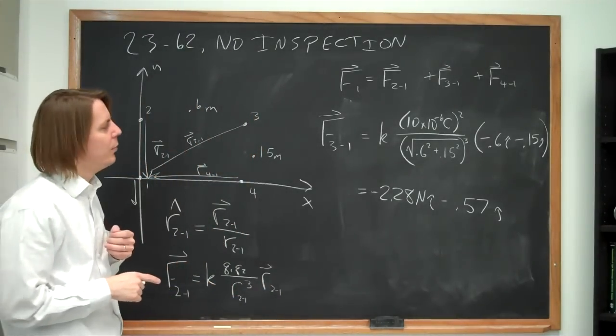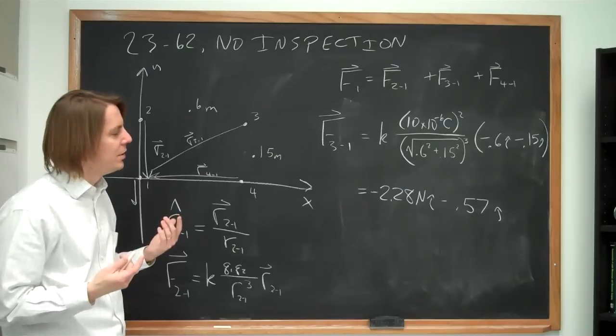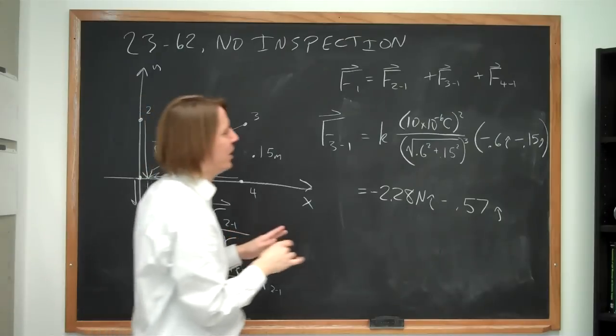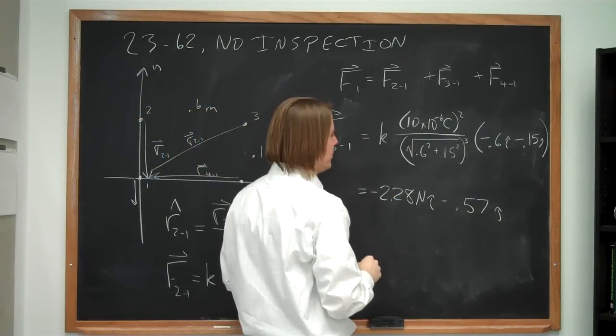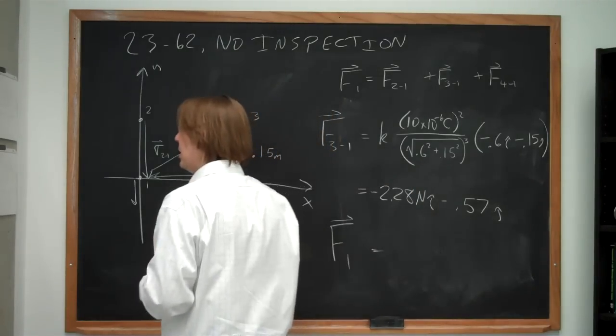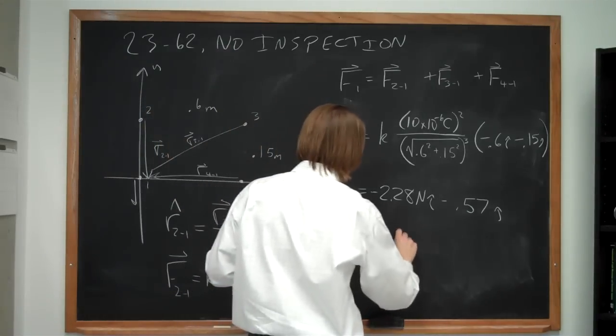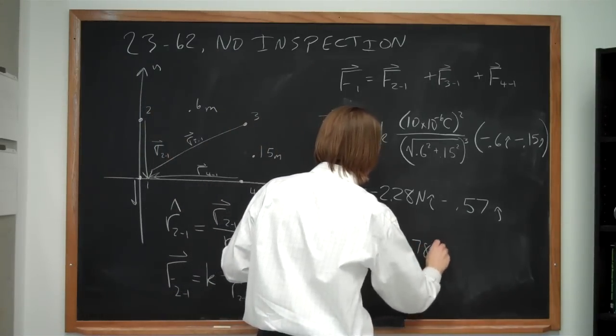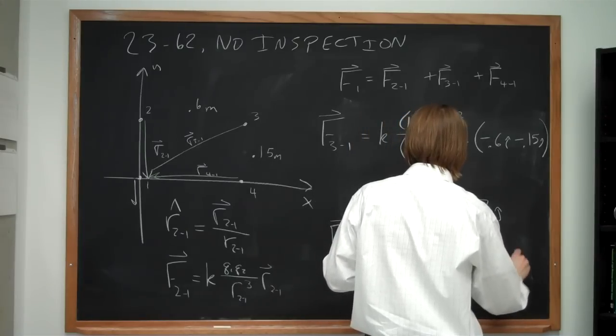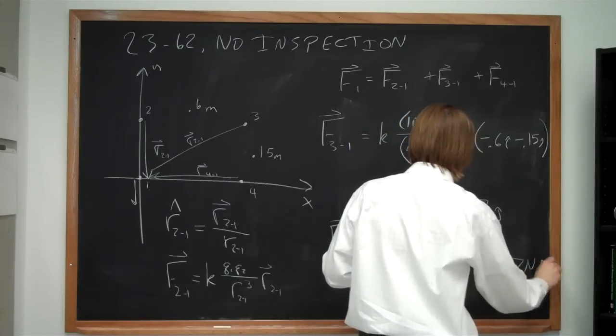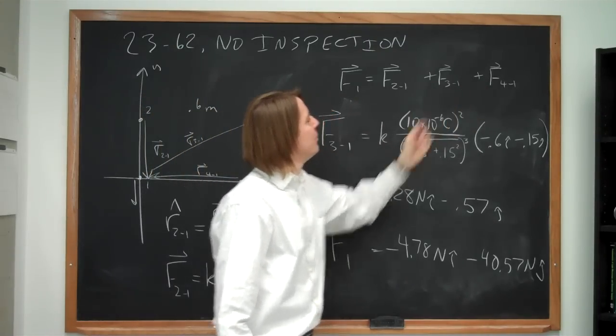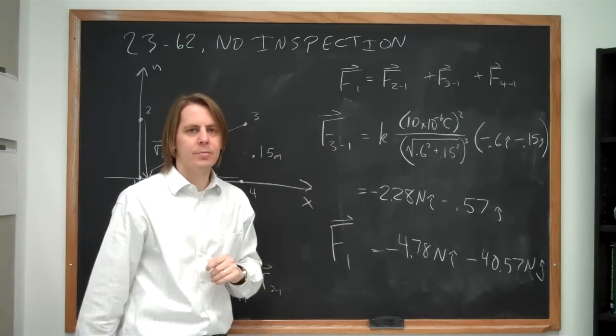And that's exactly what we got when we did 2362 the normal way in class. But there we did it with trig. We thought about this angle. If you don't like thinking about the angles in sine and cosine, you can do this very explicit way. And if you add this and the things I erased, then you get the final answer, which is the same as what I wrote before: minus 4.78 newtons i-hat, minus 40.57 newtons j-hat. So that's doing it without inspection. It's sort of the same thing for 2.1 and 4.1, but it's a very different way to do it for 3.1. Good luck.